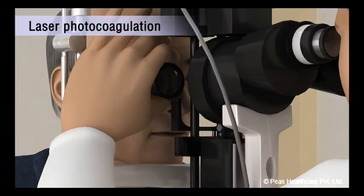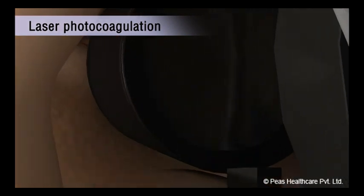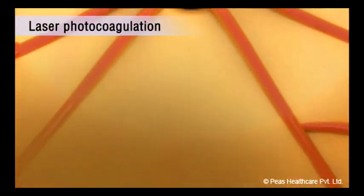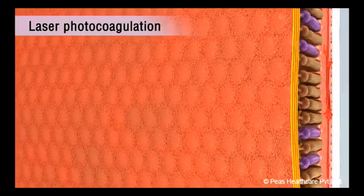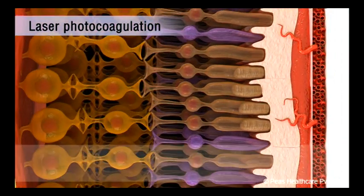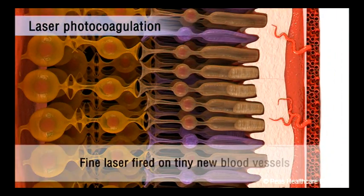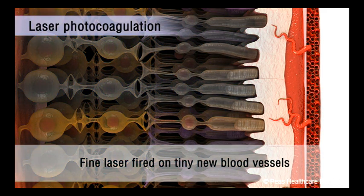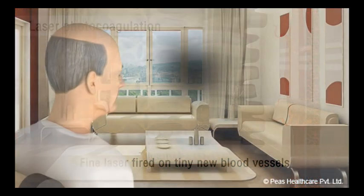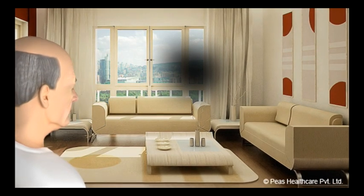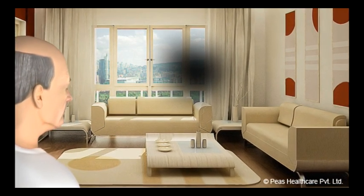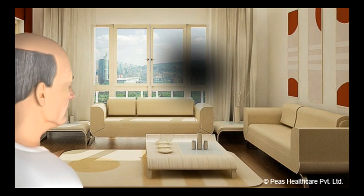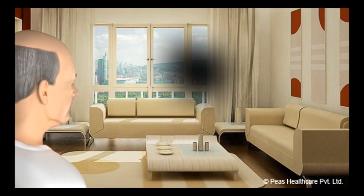In another technique called laser photocoagulation, a fine laser is fired at the tiny new blood vessels that are forming. This destroys the developing new blood vessels which helps to prevent the condition from getting worse. People undergoing this treatment will develop a permanent black or grey patch affecting their vision and no sight is restored.